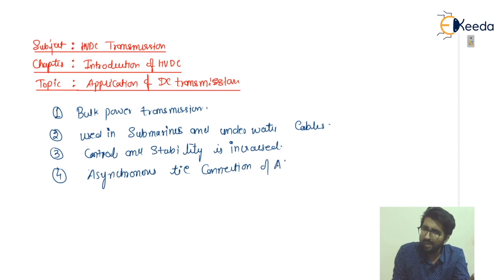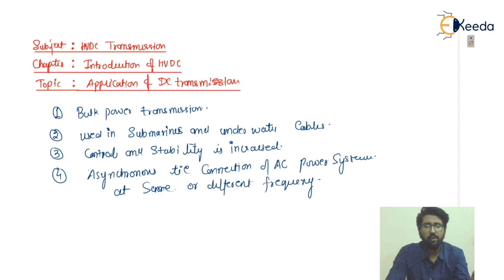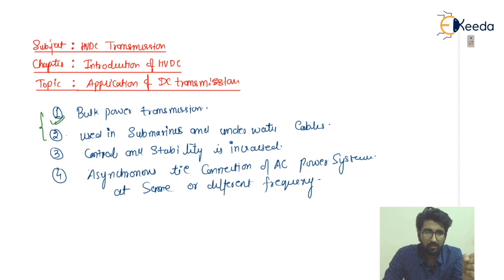The asynchronous tie is the asynchronous tie connection of AC power systems — at the same or different frequencies. Now, the first two applications — bulk power transmission and submarines/underwater cables — are related with economic factors. Controllability and stability I have already explained in previous lectures. The asynchronous tie I will discuss in this lecture.